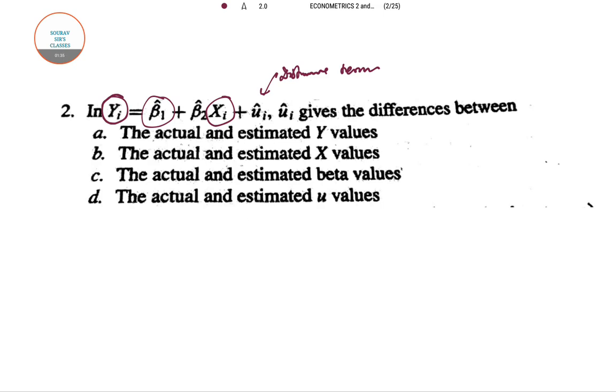This term is nothing but it covers the part of fluctuations in yi which is not been covered by xi or this beta 1 coefficient that is being given by the ui. So here ui hat or the estimated value of ui gives the difference of what. So this actually gives the difference between the actual and estimated values of Y.